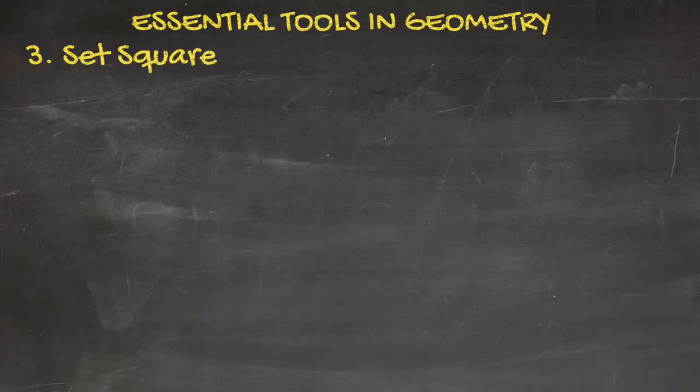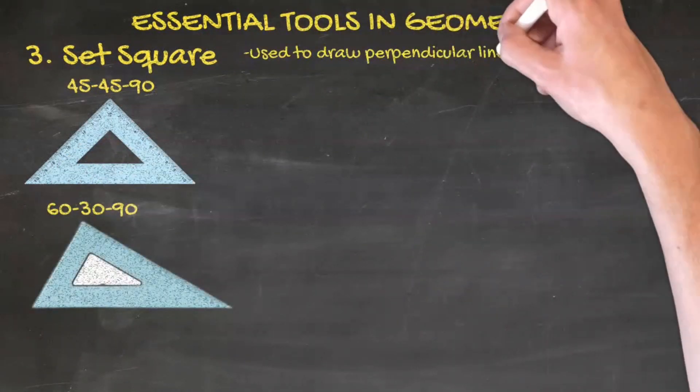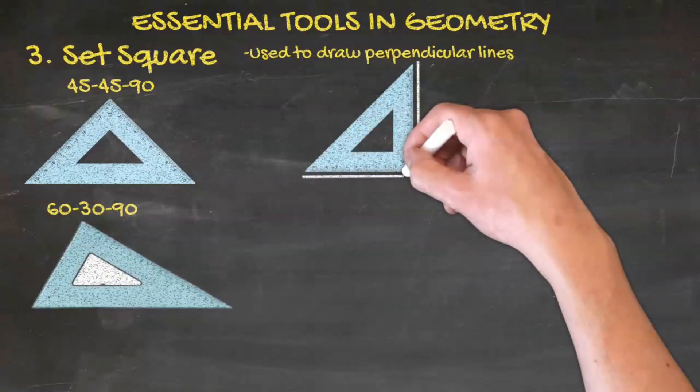Finally, we have a set square. Set squares actually have two variations, a 45-45-90 set square and a 60-30-90 set square. Set squares are used to draw perpendicular lines. To draw perpendicular lines, we just have to align the set square like this and trace it out like that.